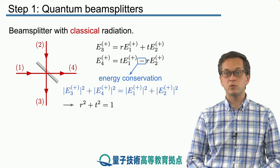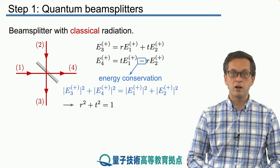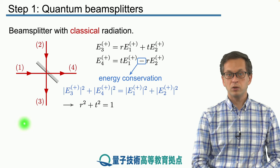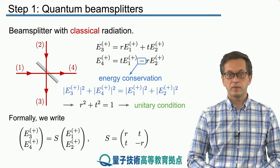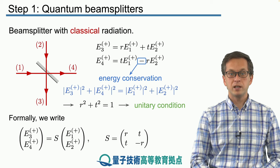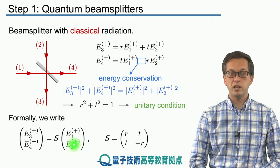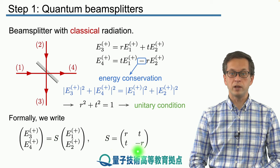R squared plus T squared equals 1. Here for simplicity we are considering that R and T are real numbers, but that's going to change in the next few slides. We will call this the unitary condition. We can write this more formally in vector notation, where the output vector of fields E3 and E4 is related to the input vector E1 and E2 by the beam splitter transformation matrix S. Don't forget the minus sign in this matrix.